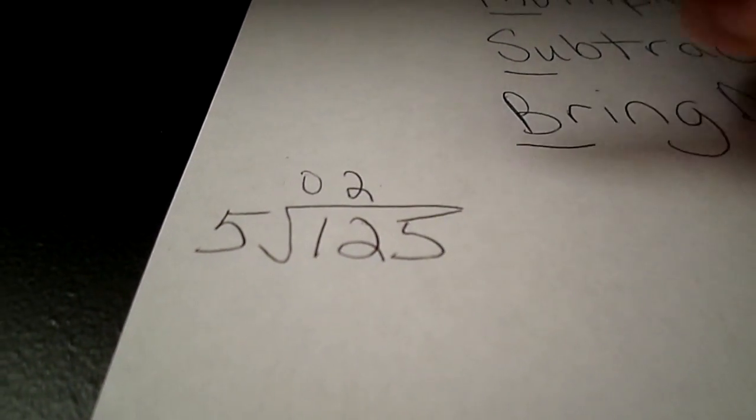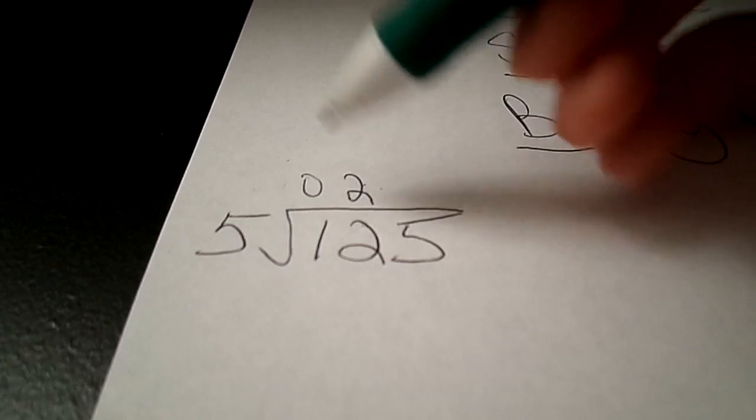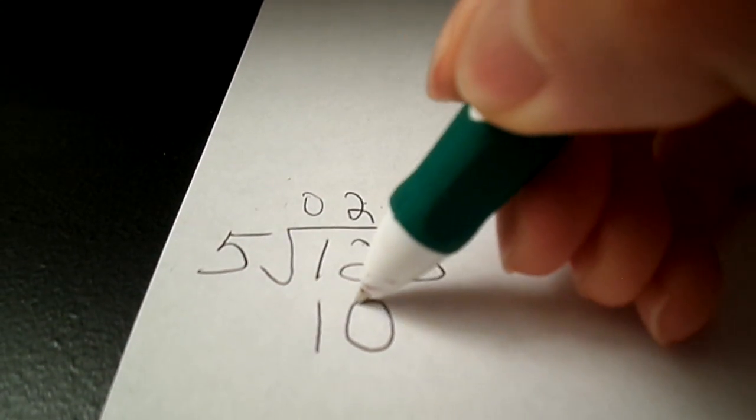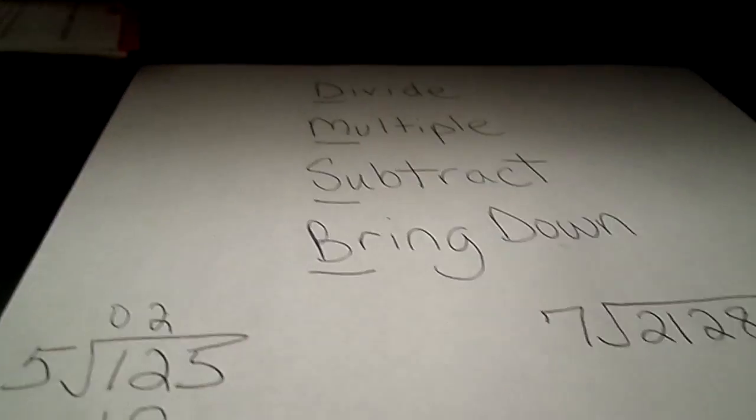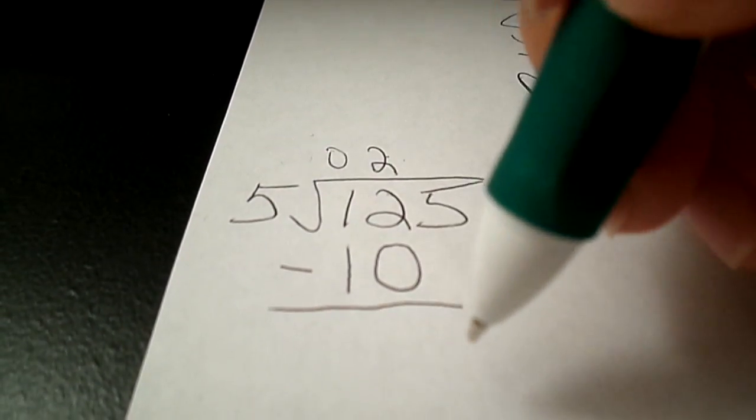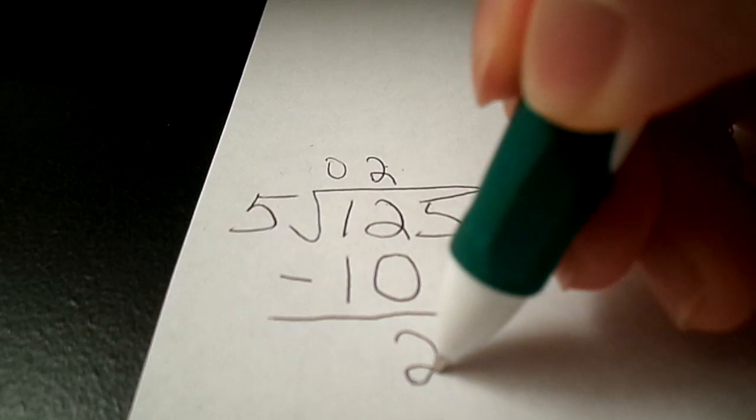We now have to complete the second step multiply. Two times five is 10. Third step is subtract. So now we're going to subtract 12 minus 10. That'll give us a 2.